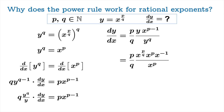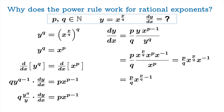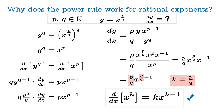Applying laws of exponents to divide out common terms and combining x to the p over q times x to the minus one, we get p over q times x raised to p over q minus 1. Identifying k as p over q, we see that the power rule dy/dx = k times x to the k minus 1 continues to work when our exponent is a positive rational number.